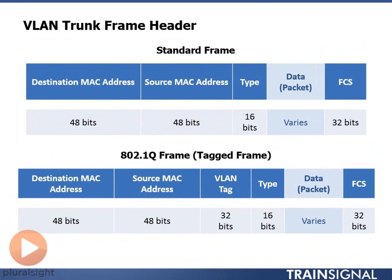A standard frame used to transfer data looks like the top chart here. We have the destination MAC address first, then the source MAC address, then the type field. That type field identifies the layer 3 protocol we're going to use in the packet. The FCS, the frame check sequence, is where we put the CRC, the cyclical redundancy check, to make sure the frame that was sent is the same as the frame that was received.